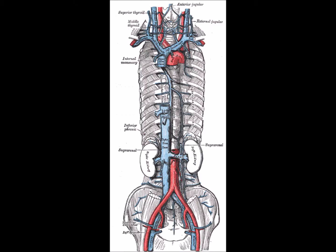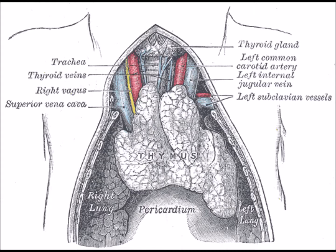Tumors causing obstruction may be treated with chemotherapy and/or radiotherapy to reduce their effects, and corticosteroids may also be given. In tricuspid valve regurgitation, these pulsations are very strong.